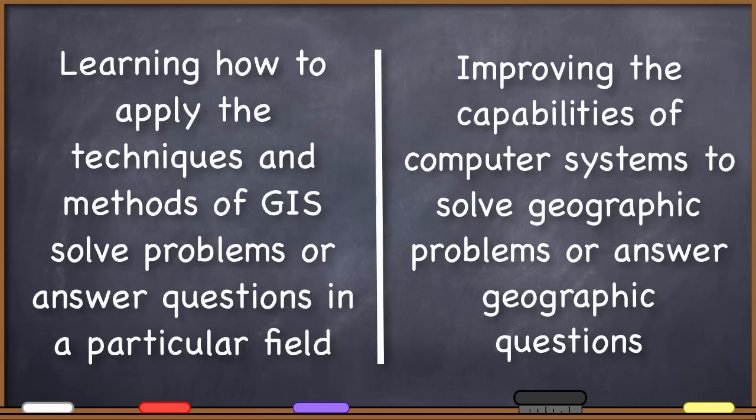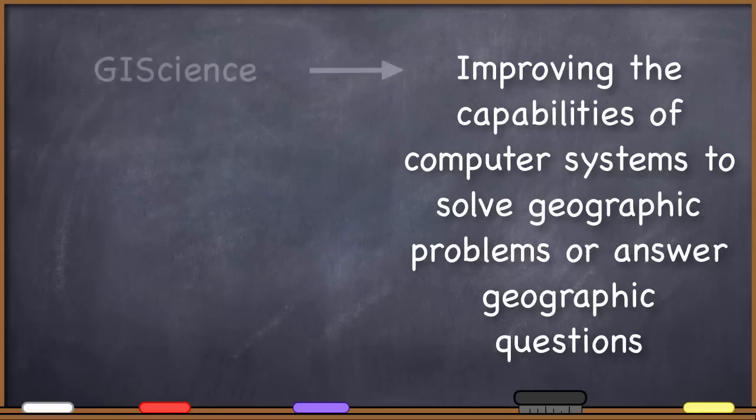That would be different from developing new or improved algorithms for the computation of hydrological models within a computer system. On one side, you're using GIS to help with some task. In another, you are improving the capabilities of the computer to help with the task. I like to use the term geographic information science for improving the capabilities of computer systems to solve geographic problems or answer geographic questions.